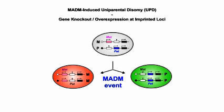In cells with such UPDs, imprinted genes get homozygosed. This has the consequence that, for example, in the red cell, maternally expressed genes are overexpressed by a factor of two, and paternally expressed genes are not expressed at all. In contrast, in the green paternal UPD, the paternally expressed genes are overexpressed and maternally expressed genes are not expressed. By using this experimental paradigm, we can now visualize the consequences of genomic imprinting at the whole chromosome level and at single-cell resolution.